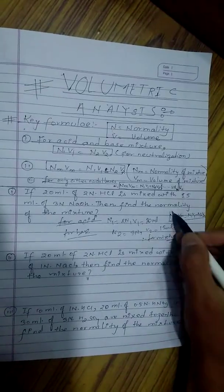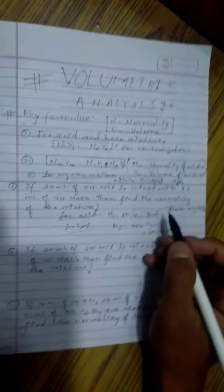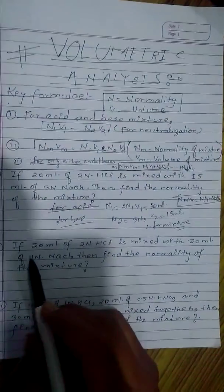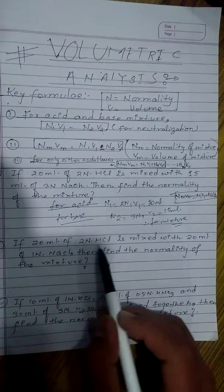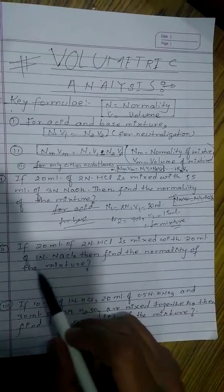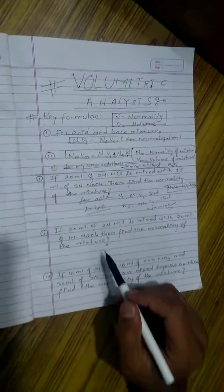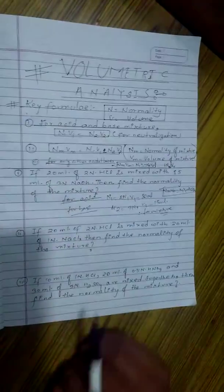Now look at the second question: if 20 ml of 2N HCl is mixed with 20 ml of 1N NaCl, then find the normality of the mixture. Question is like the first one, but look at here carefully, read the question.